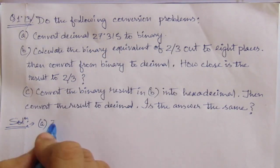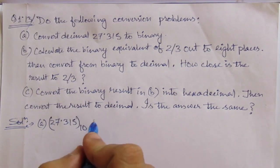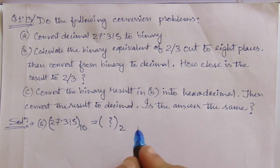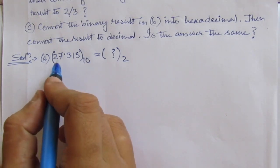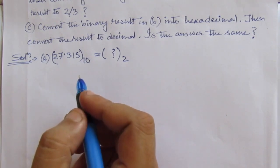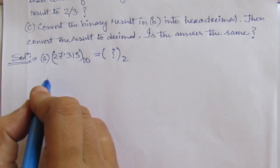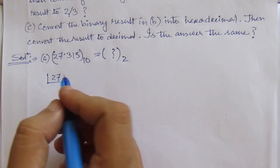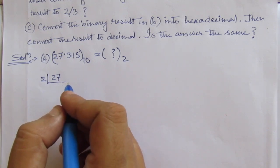Problem (a): 27.315 is a decimal number and we have to find its equivalent binary number, that is base 2. To solve this we have to consider two parts — the part before the decimal and the part after the decimal — separately. For the integer part, we convert 27 by dividing repeatedly by 2 and following the remainders.